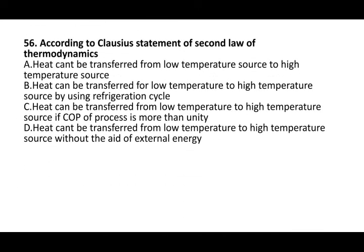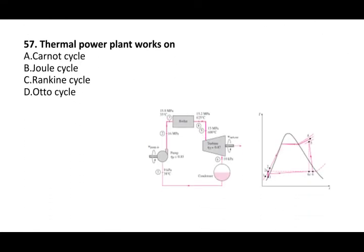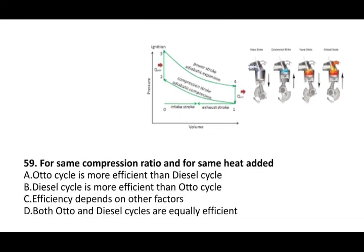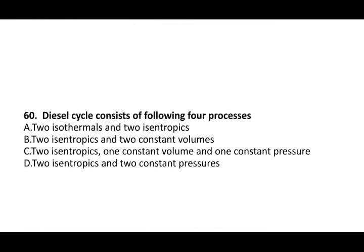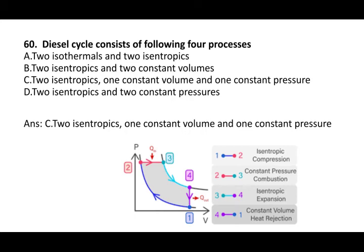According to Clausius' statement of the second law of thermodynamics, heat cannot be transferred from a low temperature to a high temperature source without the aid of external energy. Next question: a thermal power plant works on the Rankine cycle. Next question: the Otto cycle consists of two isentropic and two constant-volume processes. For the same compression ratio and same heat added, the Otto cycle is more efficient than the Diesel cycle. The Diesel cycle consists of two isentropic, one constant volume, and one constant pressure process.